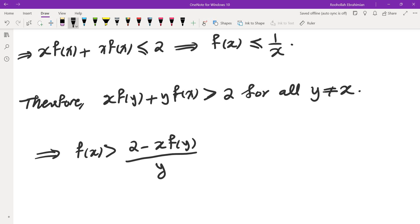Now I know that f(y) is less than or equal to 1 over y, which means this is greater than or equal to 2 minus x over y, because f(y) is less than or equal to 1 over y, which means negative f(y) is greater than or equal to negative 1 over y divided by y.